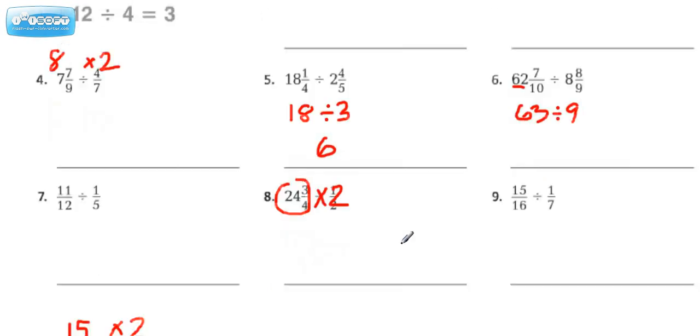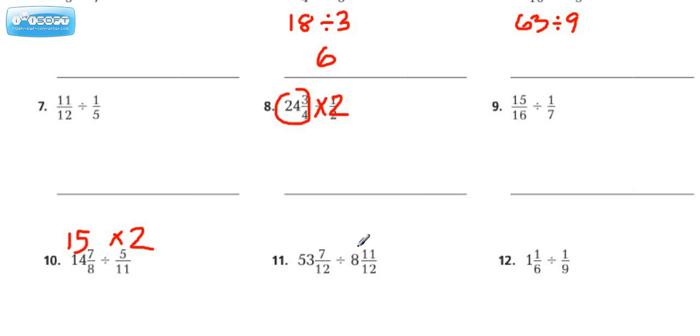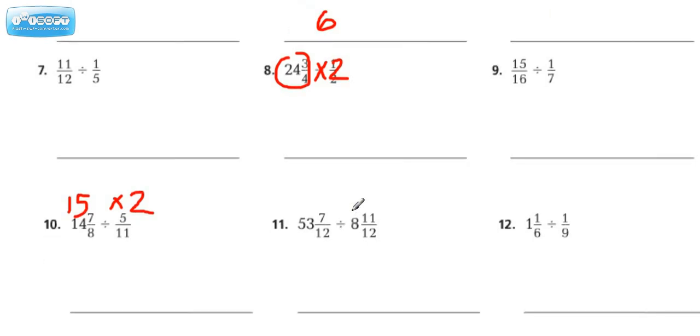Let's take a look at number 11. This is kind of close to 9, right? So we'll start by rounding the divisor. We're going to round that to 9. Ask yourself, what are some multiples of 9 that are close to 53? How about we go with 54? Do 54 divided by 9, and you're good to go for number 11.